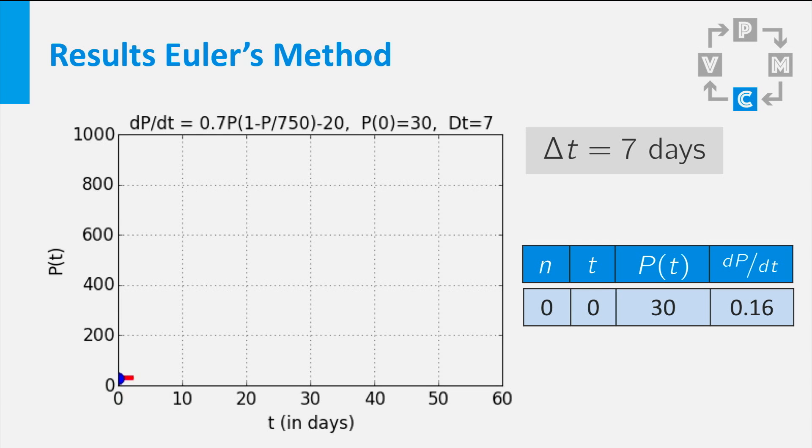This means that the line tangent to the solution curve of P has a slope of 0.16. To be precise, the slope also has a unit, it is 0.16 per day. Now we estimate the value of P after a week, as the old P plus the step size times the derivative.